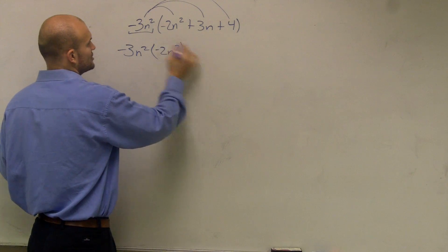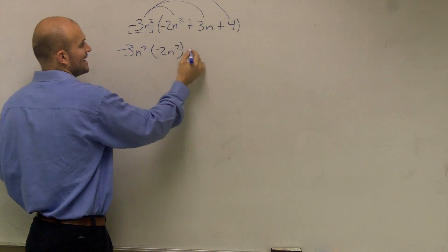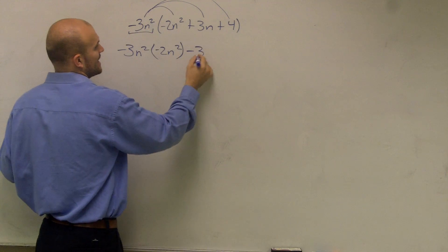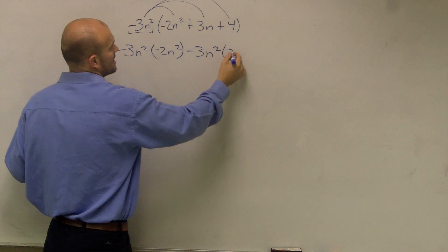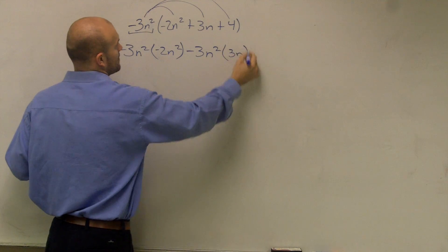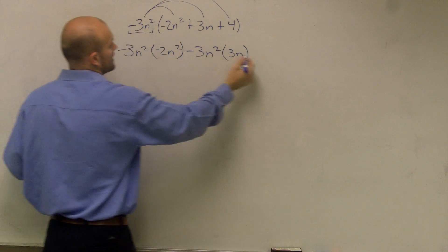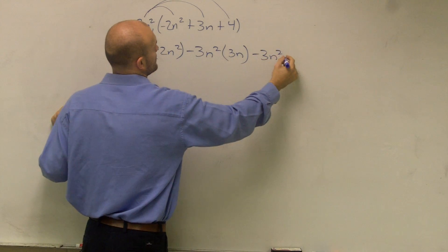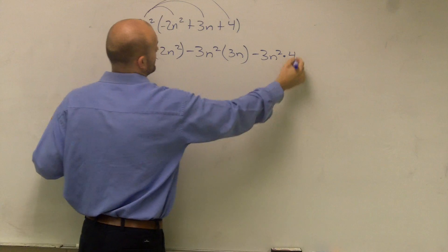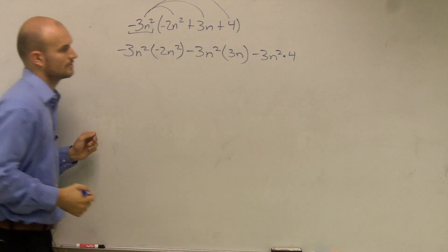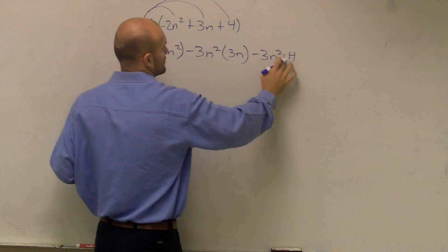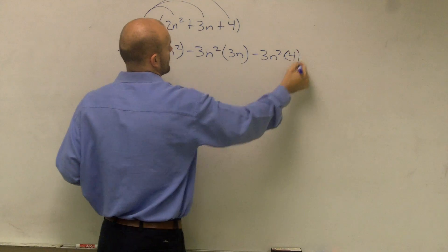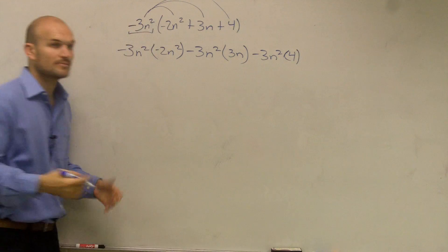Then since this is negative, it's going to be negative 3n squared times 3n. And then again, negative 3n squared times 4. I'll put those in parentheses too.